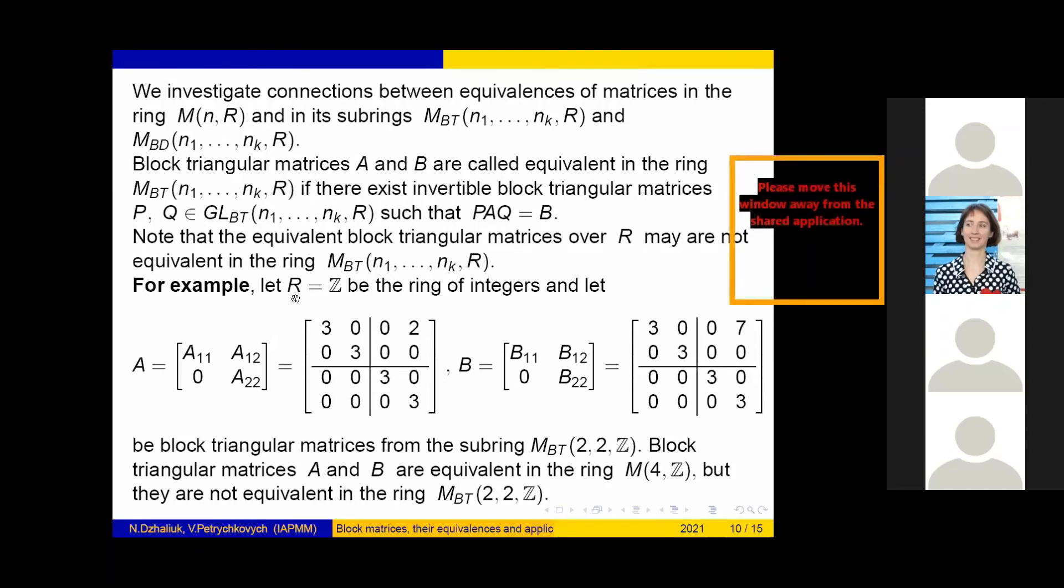Note that equivalent block triangular matrices over R may not be equivalent in the ring M_BT. For example, let R be Z, the ring of integers, and let A and B be the block triangular matrices from the subring M_BT(2,2,Z). Block triangular matrices A and B are equivalent in the ring M_4(Z) but they are not equivalent in the ring M_BT(2,2,Z).